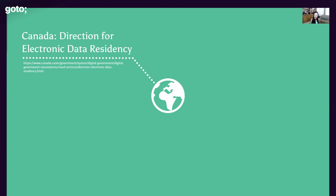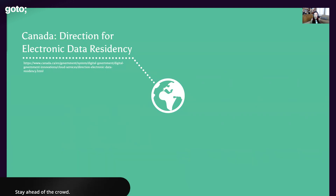The first and most common scenario is data sovereignty or data residency compliance. In Canada, the government sets out a strategic IT plan outlining directives for all government entities. Their 'Direction for Electronic Data Residency' states that any sensitive electronic data under government control must be stored within the geographic boundaries of Canada. British Columbia and Nova Scotia apply this to all public data, whereas Ontario applies it solely to healthcare data — specifically health records.